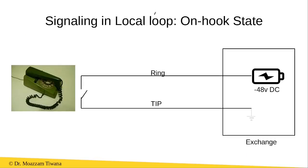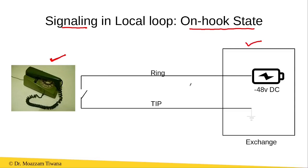In order to understand the signaling between the telephone and the exchange, we need to understand the states of the telephone. When the handset of the telephone is placed over the telephone, this state is called the on-hook state.